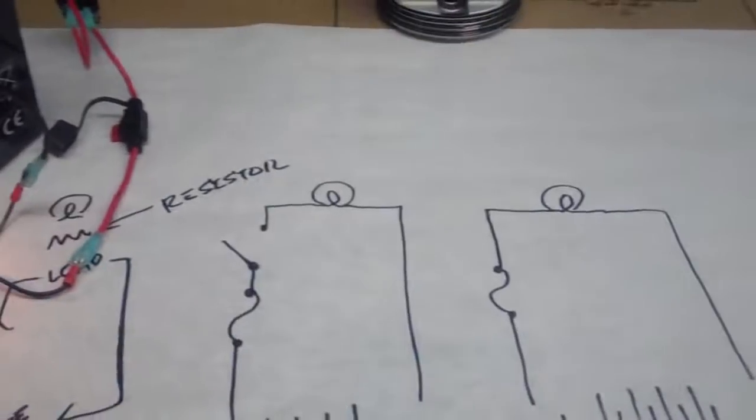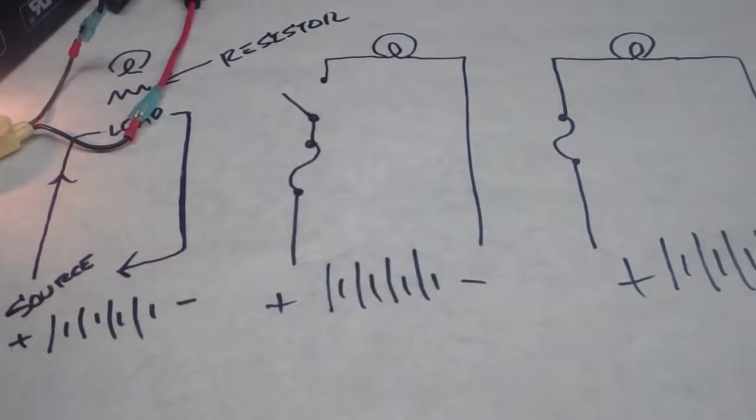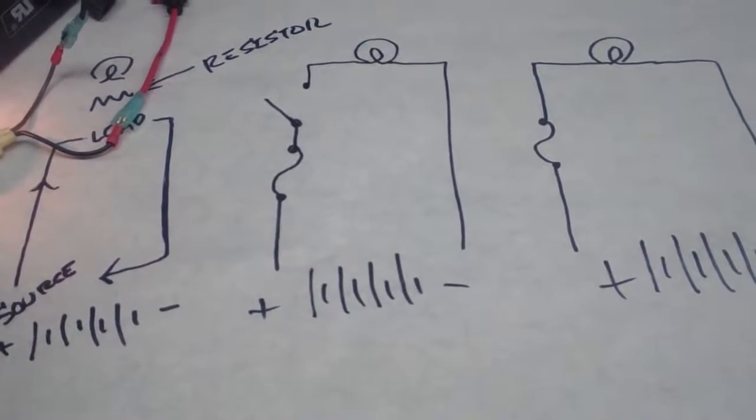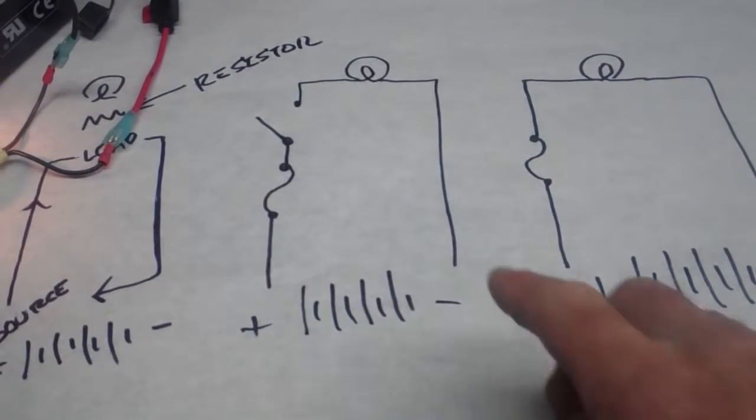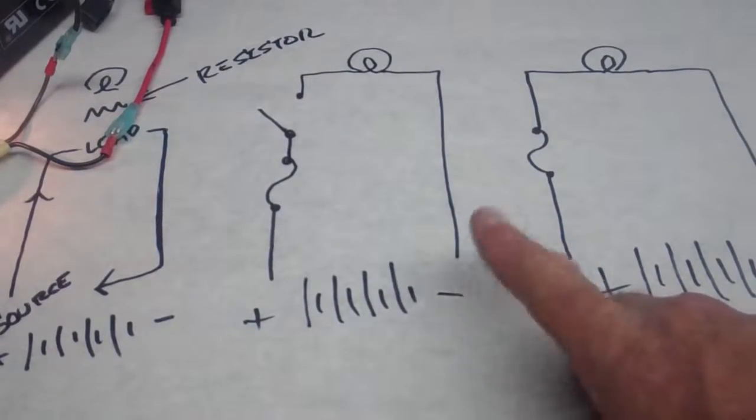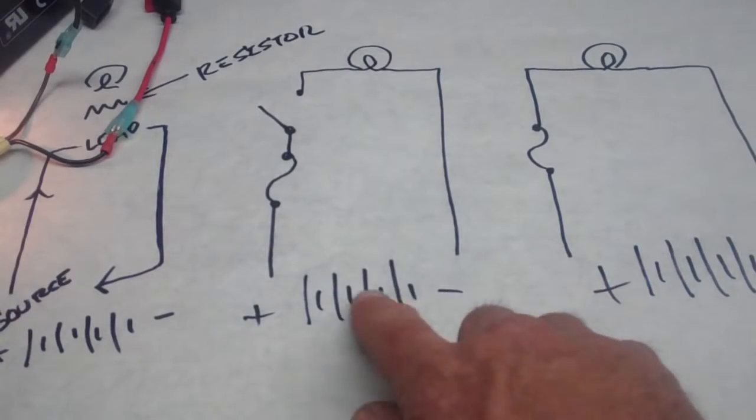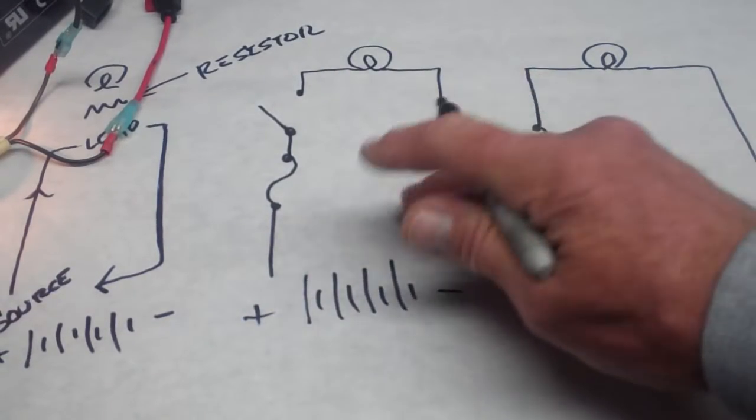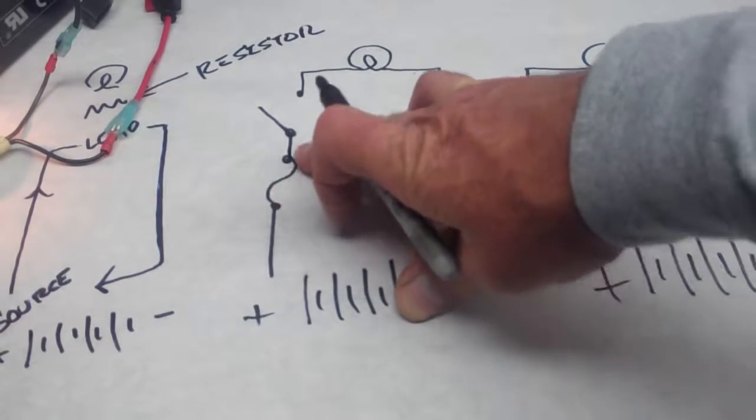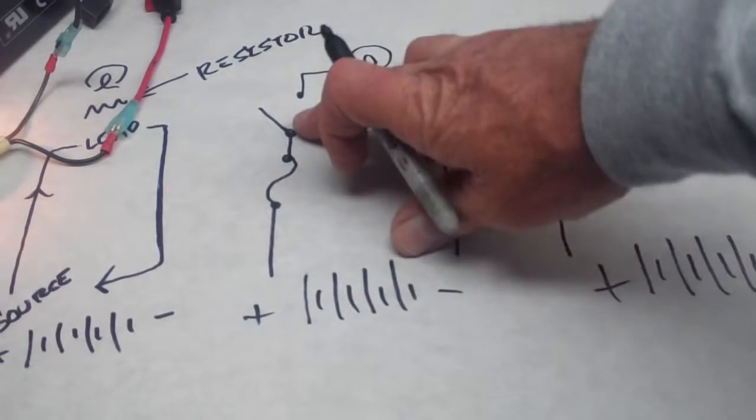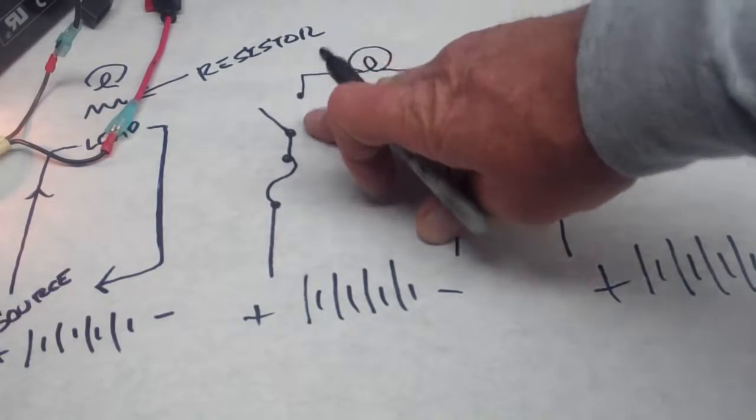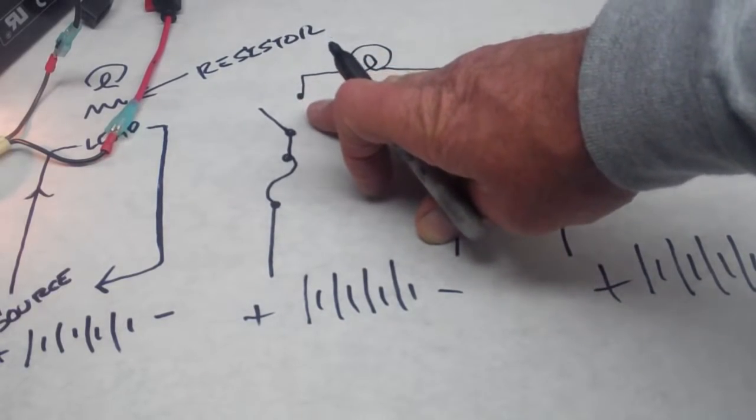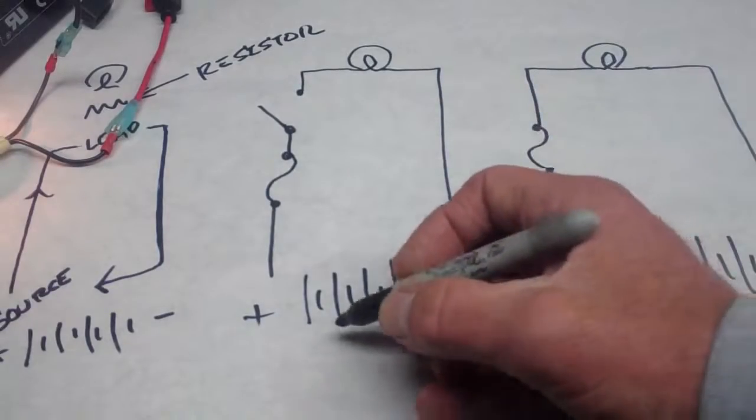So now this middle circuit diagram shows us all the components that we need to have for what we would consider a complete circuit. I have a source. I have a current path. I have some kind of fuse protection here or circuit protection. I've got a way to control my circuit here with the switch. I've got my load and return path.